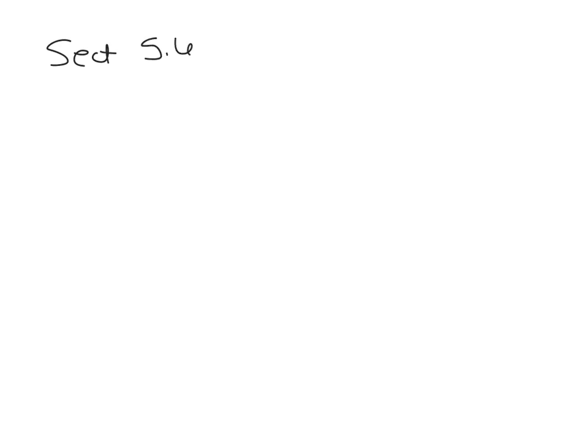We're going to work through section 5.6 of your Intermediate Algebra book, starting on page 206. The topic is complex numbers. We're going to talk about imaginary numbers. The little letter i traditionally stands for the imaginary number. i squared equals negative 1, so that means i equals the square root of negative 1. In previous lessons, we talked about how the square root of a negative number is not a real number — this is why we call it imaginary.